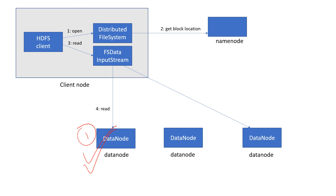It will then read the remaining information from DataNode 3 by connecting to it and performing a read operation there as well. Once both reads are successful, the FSDataInputStream will get closed, and this is how the HDFS read operation is performed.